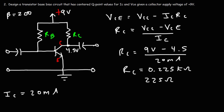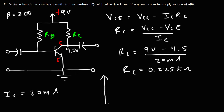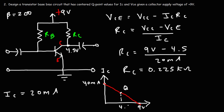It's not very common to find a 225 Ω resistor, so you could use a 220 Ω resistor combined with a 5.1 Ω resistor for approximately 225 Ω. If we draw the DC load line, the Y-intercept will be VCC divided by RC — 9 divided by 0.225 equals 40 milliamps as the maximum saturation current. The maximum VCE is 9 volts, and our centered Q-point is 4.5V and 20mA.